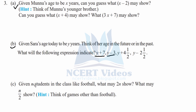If n students in the class like football, then 2n means cricket is loved by twice the number of students who like football. n divided by 2 means chess is loved by half the number of students who love football. We are representing every number of students in terms of football. This was question number three.